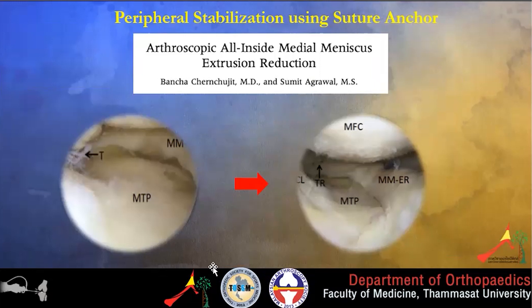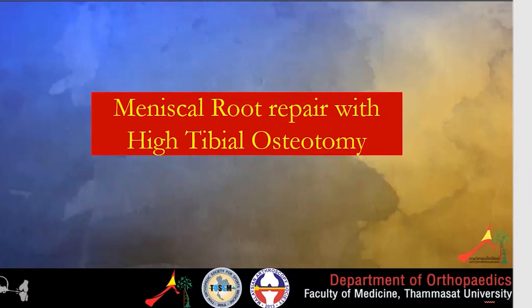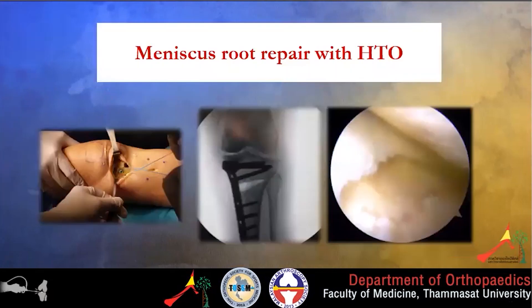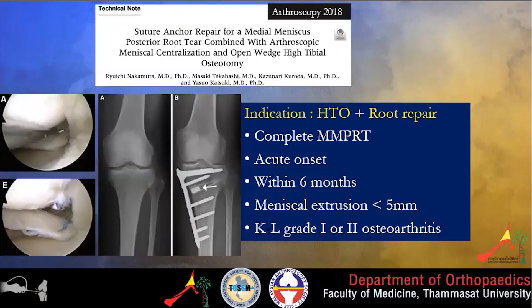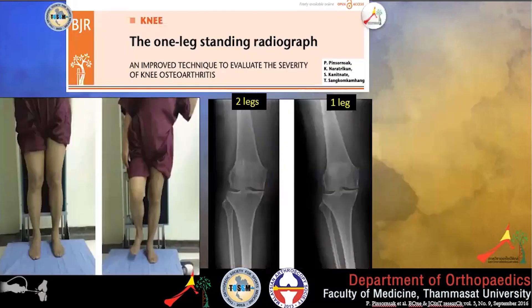How about meniscus root repair combined with high tibial osteotomy? For patients with varus malalignment and cartilage degeneration, HTO combined with meniscus root repair is the way to manage this situation. Indications for combined HTO and root repair include complete meniscus root tear, acute onset within six months, meniscus extrusion less than 5 mm, and Kellgren-Lawrence grade 1 to 2 osteoarthritis. Many times the X-ray looks normal, so we prefer the single-leg standing view — proposed by the group in Thammasat, Thailand — which is very useful to detect actual joint space narrowing and axial axis deviation.